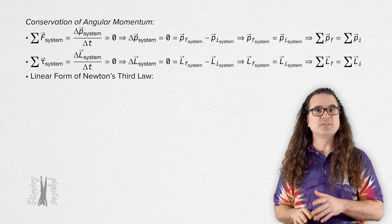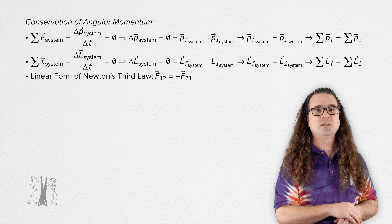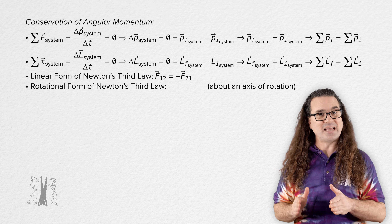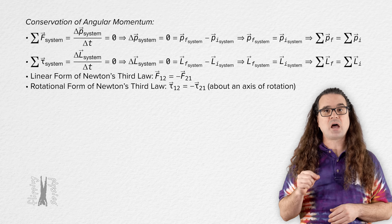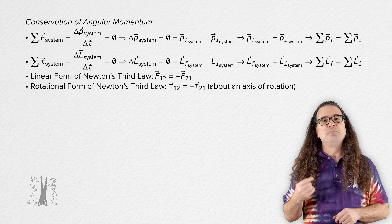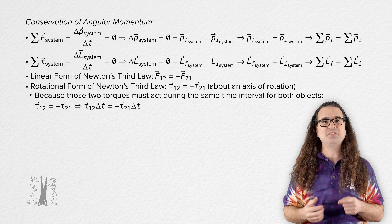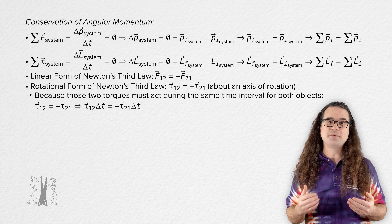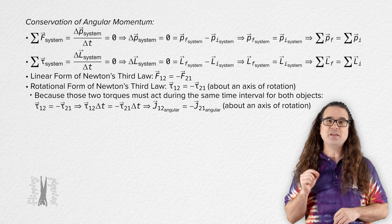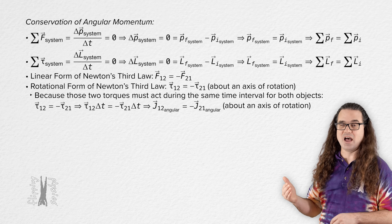Newton's third law states that the force exerted by object one on object two is equal and opposite to the force exerted by object two on object one. There is a rotational form of Newton's third law: about an axis of rotation, the torque exerted by object one on object two is equal and opposite to the torque exerted by object two on object one. Because those two torques act during the same time interval, multiplying both sides by change in time gives that the angular impulse exerted by object one on object two is equal and opposite to the angular impulse exerted by object two on object one.